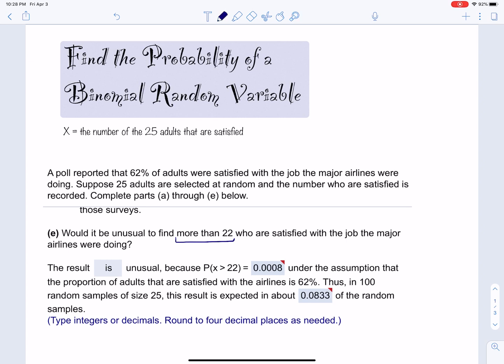Also, we have a constant probability of 0.62 because 62% are satisfied with the job the major airlines are doing. And it's binomial. So we can say that X is a binomial random variable standing for the number of the 25 adults that are satisfied.